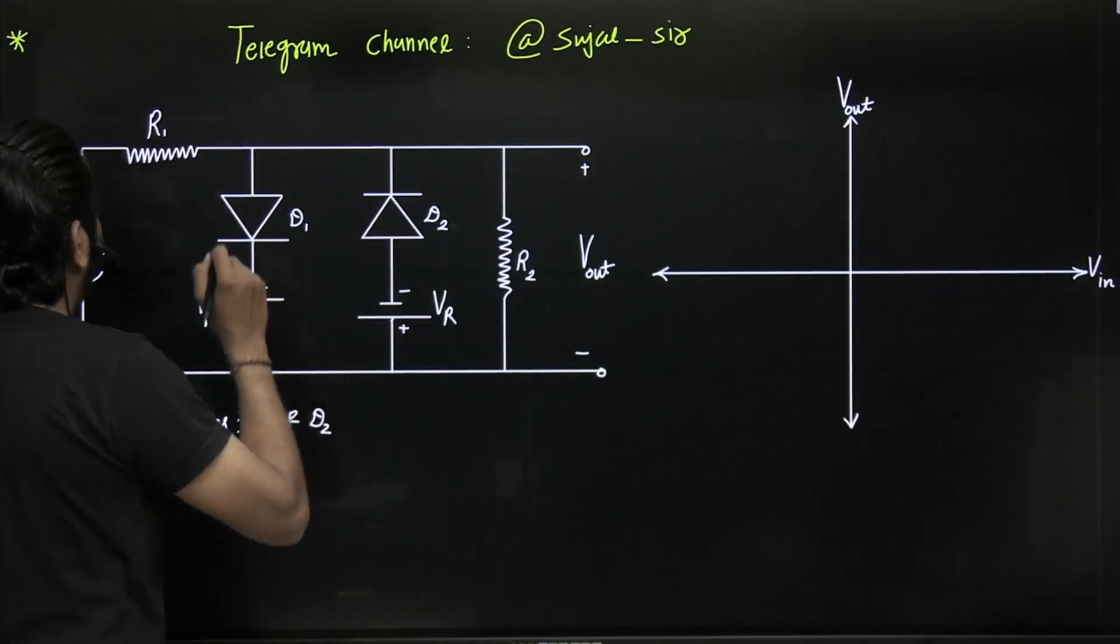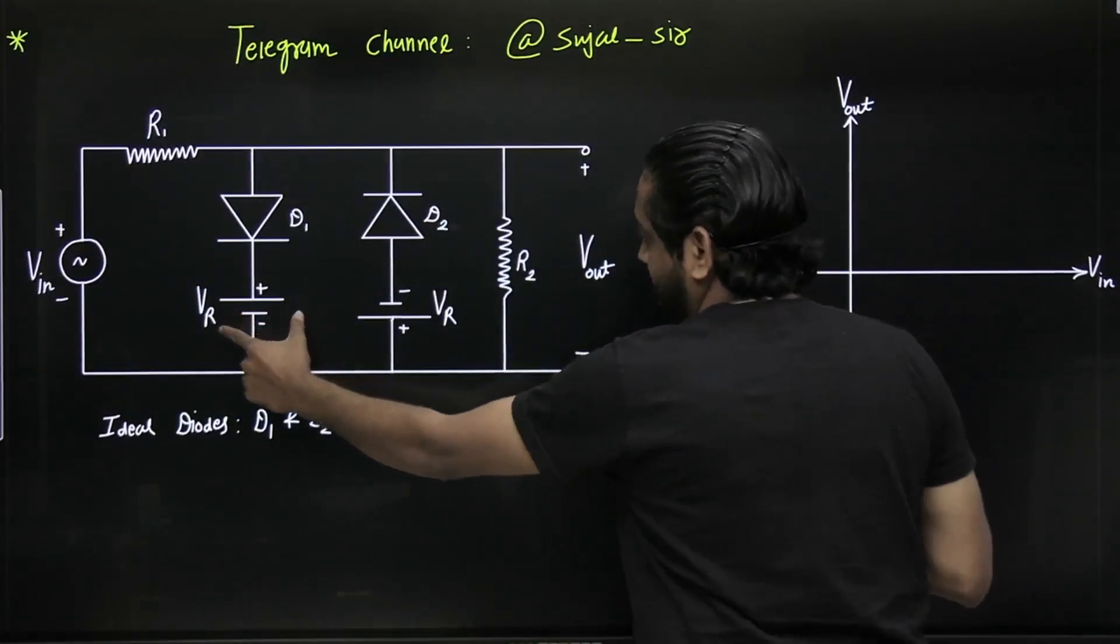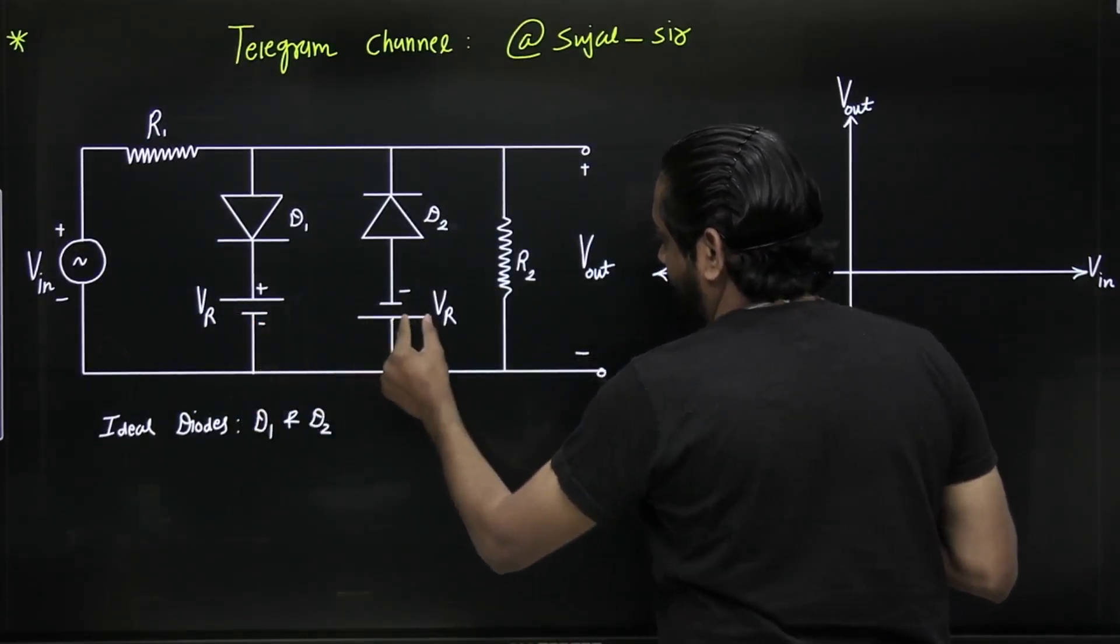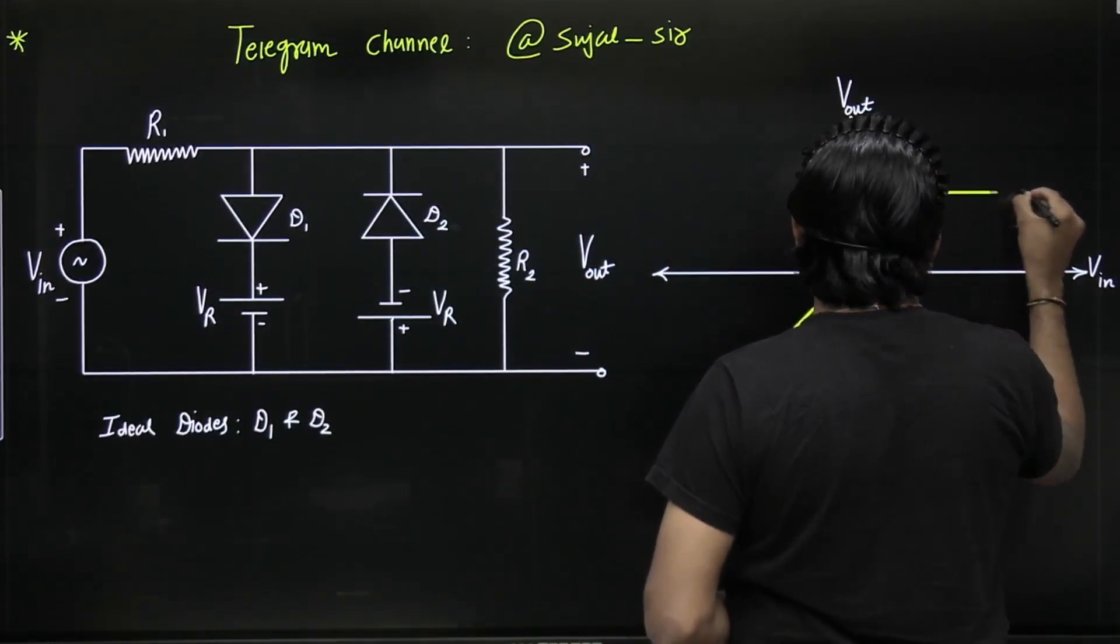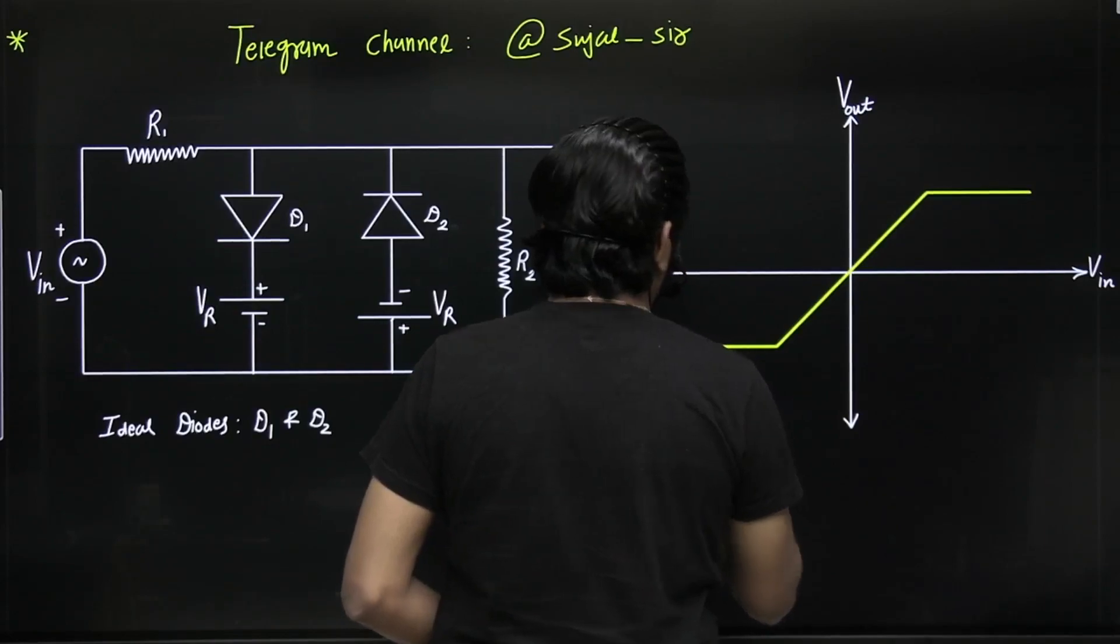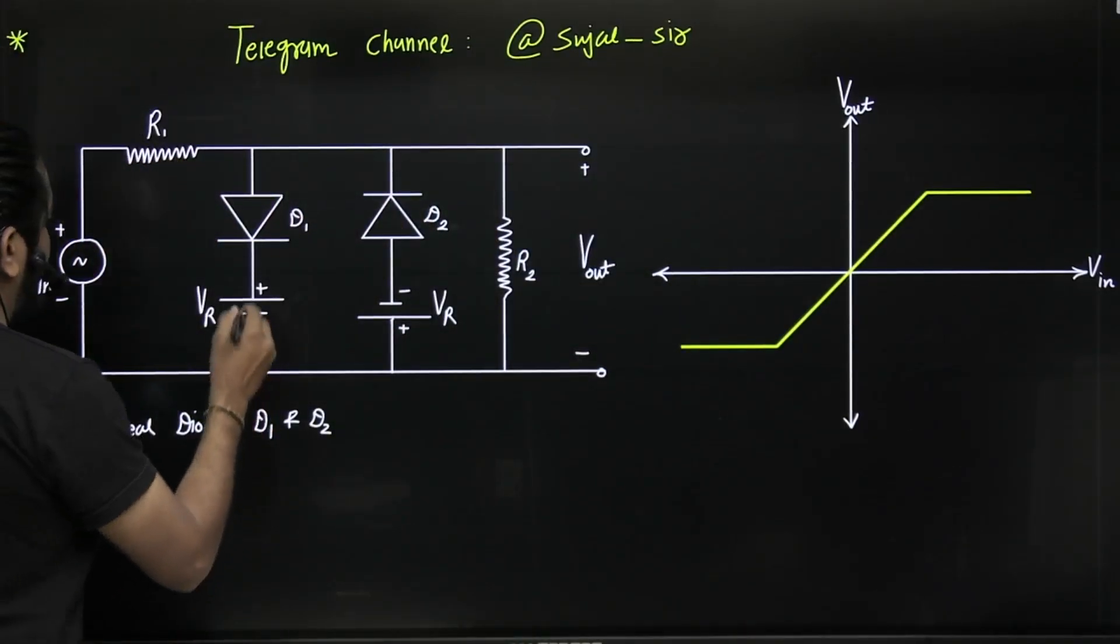Make sure downward direction higher value, upper direction lower value. Then the answer is always like this. Here this is positive with respect to ground and this is negative with respect to ground. So always the answer transfer characteristic will be like this.